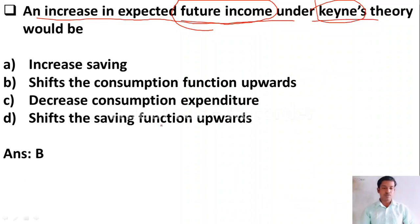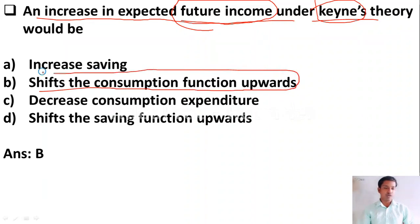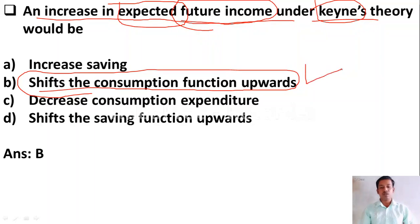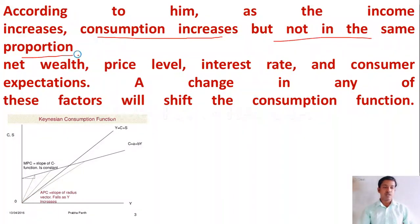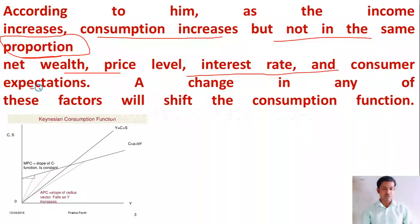When future expected income increases, the consumption function will shift upward. As you all know, according to Keynes, when consumption is even up, income is going to increase. When they are expecting an increase in income in the future, presently they will consume more, so the consumption function will move upwards. According to Keynes, as income increases, consumption also increases, but not in the same proportion — it is less than the increase in income. The determinants of consumption include wealth, price level, interest rate, and consumer expectations. A change in any of these factors will shift the consumption function.